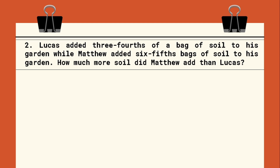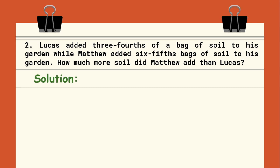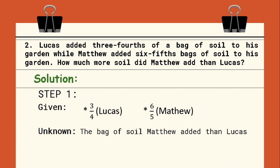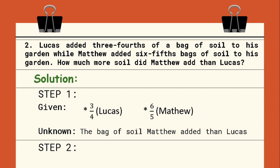Example 2. Lucas added 3 fourths of a bag of soil to his garden, while Matthew added 6 fifths bags of soil to his garden. How much more soil did Matthew add than Lucas? Step 1: Lucas added 3 fourths of a bag of soil and Matthew added 6 fifths bags of soil. We need to find how much more soil did Matthew add than Lucas. Step 2: since we are finding the difference, our expression will be 6 fifths minus 3 fourths.